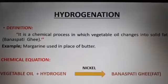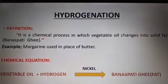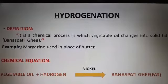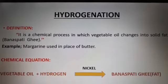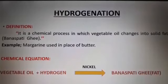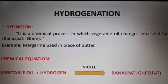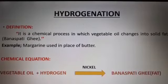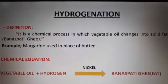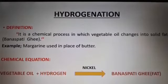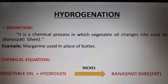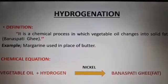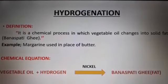First of all we will see what is hydrogenation. It is a chemical process in which the vegetable oil changes into solid fat which is called banaspati ghee. The best example is margarine, which is used in place of butter. This chemical reaction takes place when hydrogen is passed through vegetable oil in the presence of nickel. The nickel on the arrow indicates that the reaction will occur only in the presence of nickel — it is a condition.